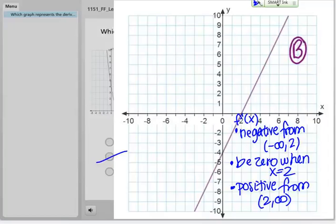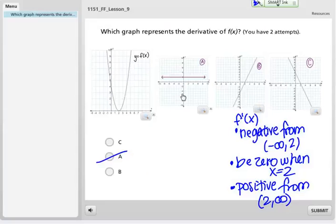What about choice B? Choice B is a line and it starts out negative. That's good. I see that my line is negative until we get to 2 and then I see that I cross the axis. So my function is 0 when x equals 2 and then my function is positive for the rest of time. So it's positive from 2 to infinity. That meets all my criteria. So choice B is the correct answer in this case.